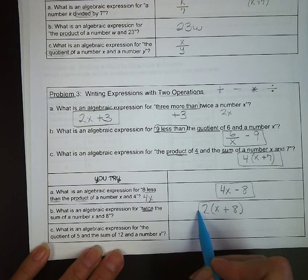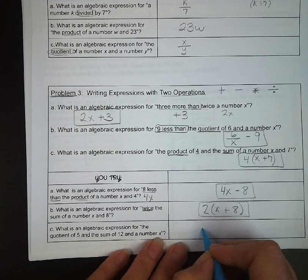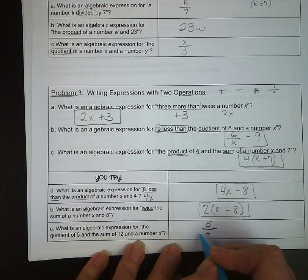Letter C, what is an algebraic expression for the quotient of five and the sum of twelve and a number x? So we've got quotients, we're dividing. The part that came first was five, so that's going to be our numerator. And we are dividing it by the sum of twelve and a number x, so it's going to be twelve plus x in our denominator.